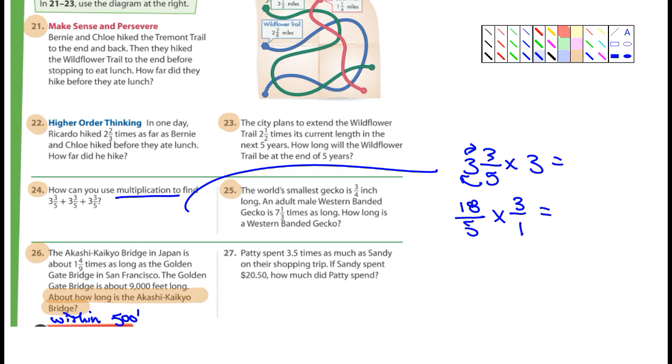And then, you could do 27 also. And I'm not worried about 28 and 29. 27, Patty spent 3 and a half times as much as Sandy on their shopping trip. If Sandy spent 20.50, how much did Patty spend?